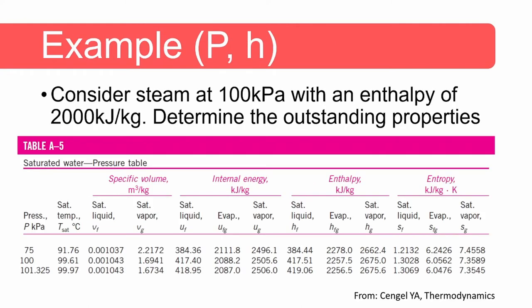We can also determine the phase by looking at the tabulated values on the saturated water pressure table. At 100 kilopascal, the enthalpy of saturated liquid is 417.51 kilojoules per kilogram and the enthalpy of saturated vapor is 2675 kilojoules per kilogram. The enthalpy of our system is between these two values and therefore it is a mixture of vapor and liquid. For a two-phase mixture, the temperature is the saturation temperature at 100 kilopascal, which is 99.61 degrees Celsius.